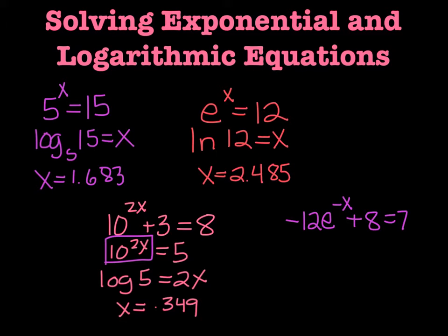So as you can see, solving these you just have to work PEMDAS backwards until you isolate your exponential function. So here we need to take away 8, so e to the negative x equals negative 1. Then I need to divide off the negative 12. That has to go away too. So e to the negative x equals negative 1 divided by negative 12 would be 1 twelfth.